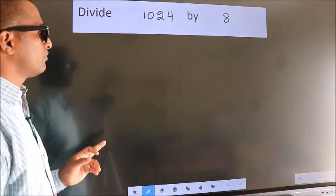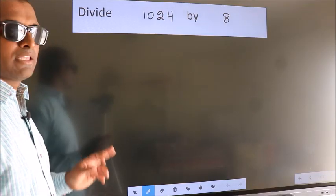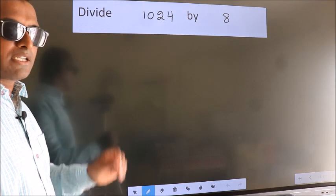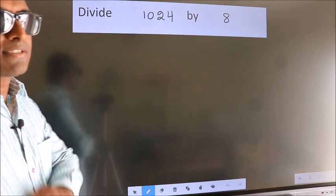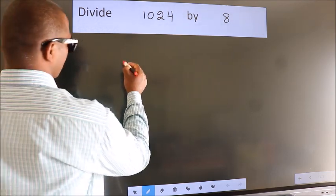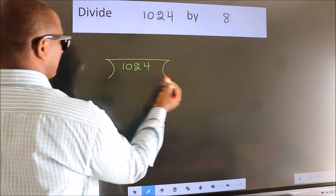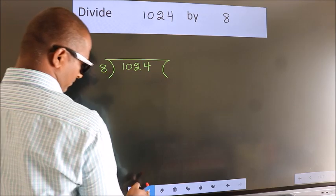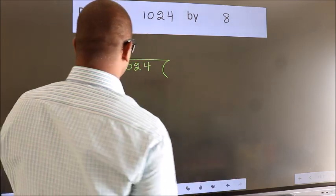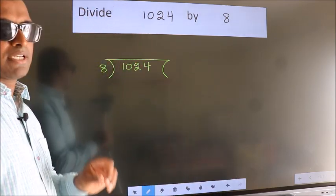Divide 1024 by 8. To do this division, we should frame it in this way: 1024 here, 8 here. This is your step 1.